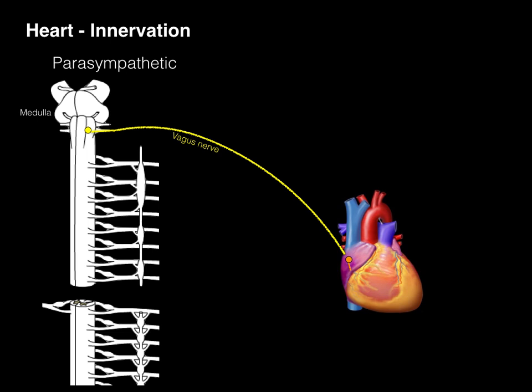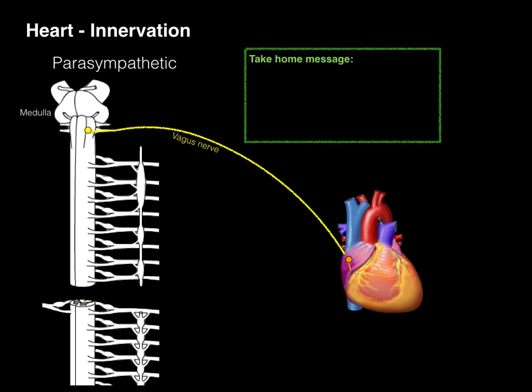When it comes to parasympathetic innervation of the heart, the key structure is the vagus nerve. The take-home message is: the medulla is where the parasympathetic impulse arises, the vagus nerve is the vehicle to take this innervation to the heart, which synapses at an intramural ganglion and decreases heart rate and contraction.